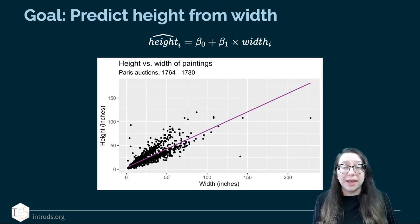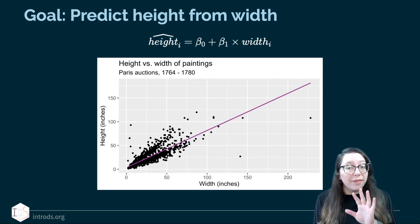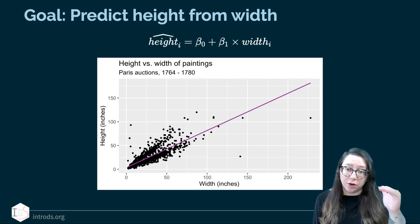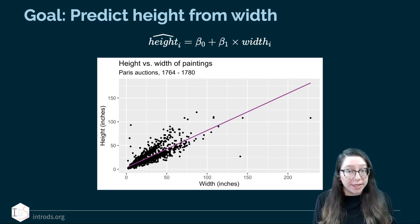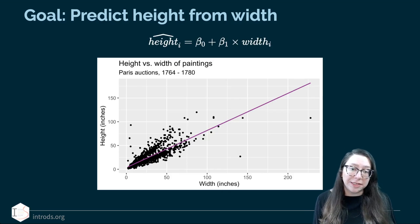Our goal is to predict the height of the paintings from their width. The formula basically says that the predicted height of a painting — the little i next to it stands for each painting, going from 1 through 3,393 — is equal to beta 0, which stands for the intercept, plus beta 1, which is the slope, times the width of that painting, so width i.